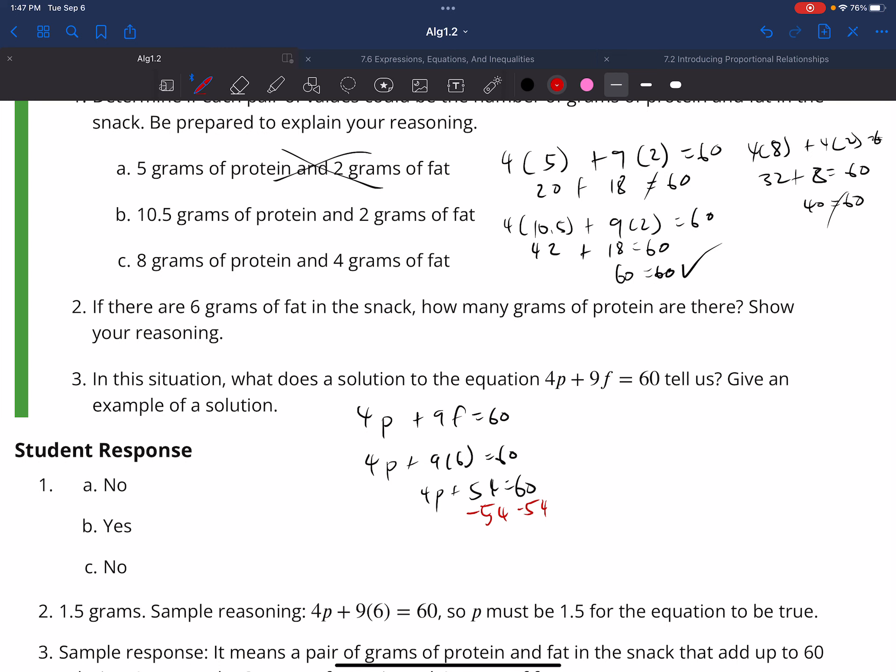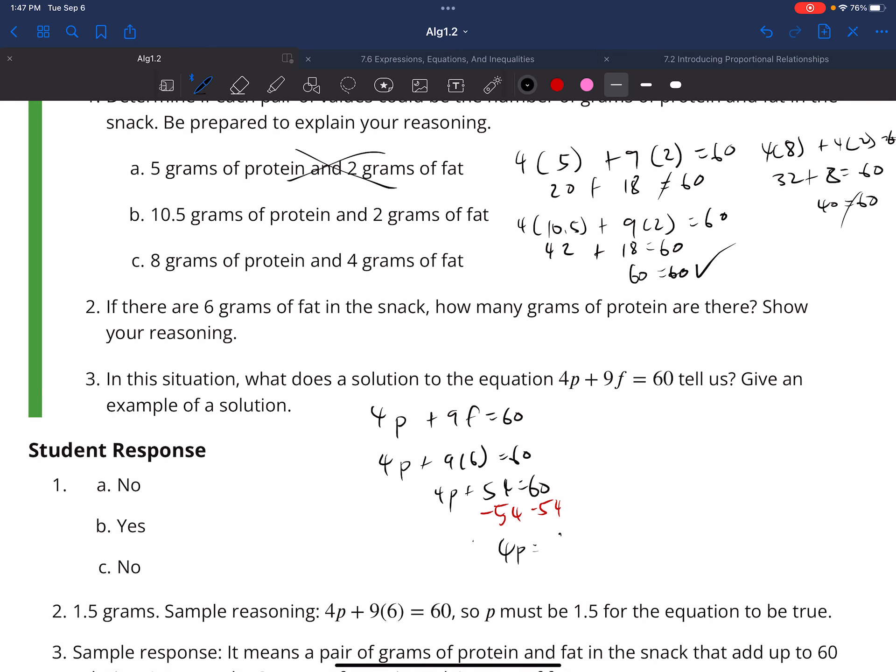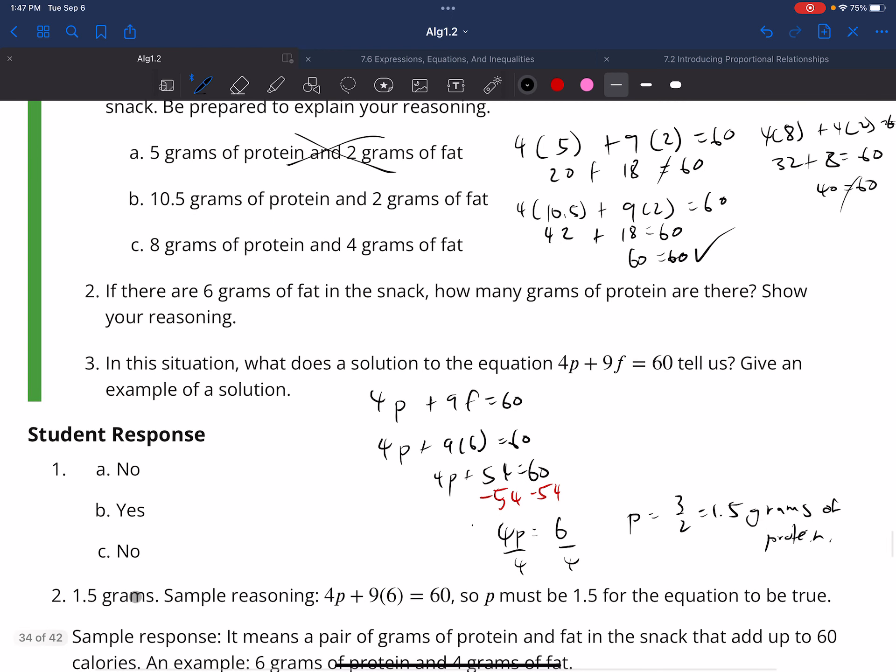And then it's going to be 4P is equal to 6 divided by 4. So it's going to be 3 over 2, about 1.5 grams of protein. So if there were 6 grams of fat, then I need 1.5 grams of protein to make 60 calories. Let's look.